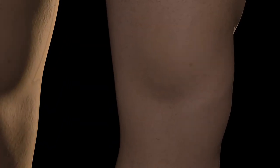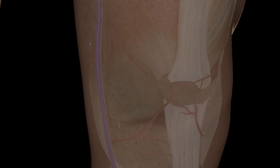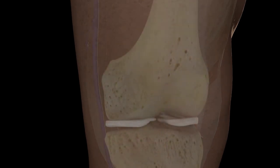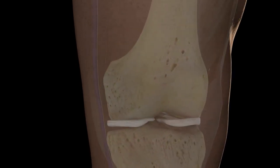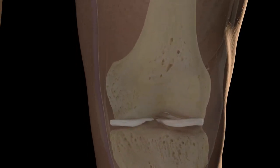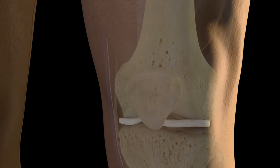The knee includes the condyles of the distal femur, proximal tibia, and the head of the fibula. Anterior to these structures is the patella.